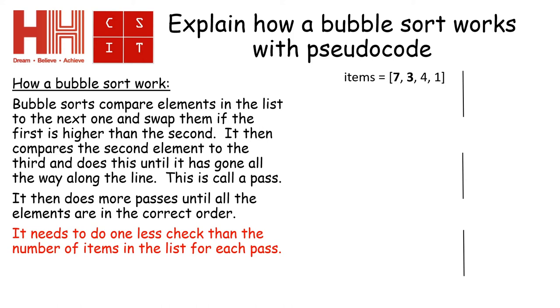So if we start off with the first two numbers, we're going to compare the seven and the three. I'm going to need to swap them, so the array will now become the next one down, which is three, seven, four, one. I then move along one position to where the seven is now, and I compare the seven with the four. Because the seven is greater than the four, I swap them again.